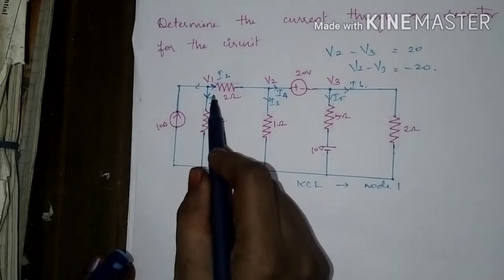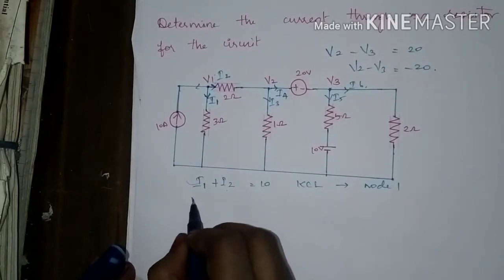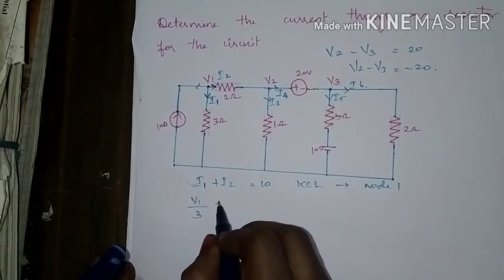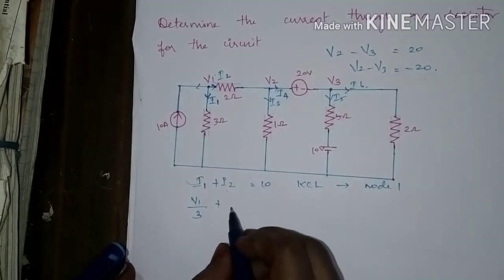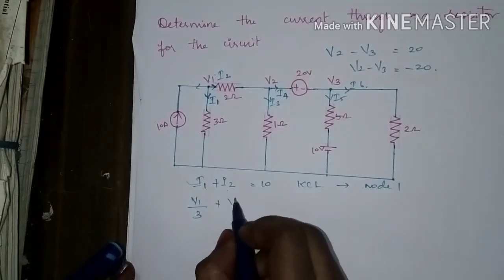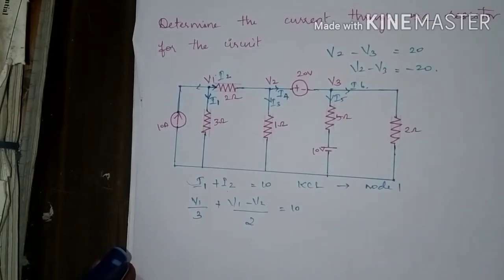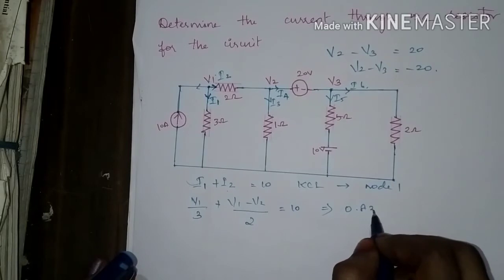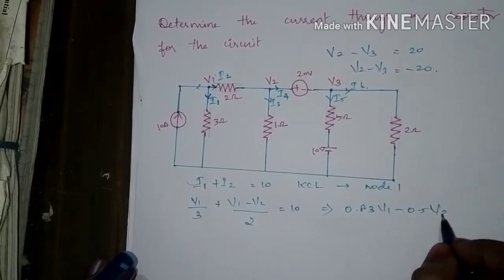I1 can be given by V1 divided by 3, and I2 can be given by V1 minus V2 divided by 2 ohms. So V1 divided by 3 plus V1 minus V2 divided by 2 equals 10. This simplifies to 0.83 V1 minus 0.5 V2 equals 10.